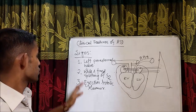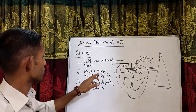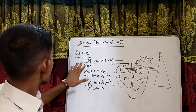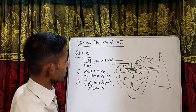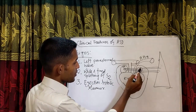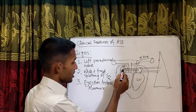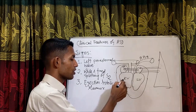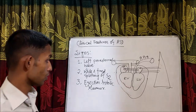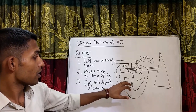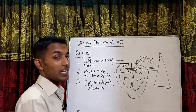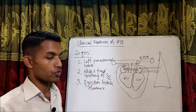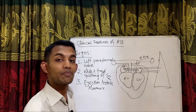Now what are the signs of ASD? The first sign is left parasternal heave, then wide and fixed splitting of S2, and ejection systolic murmur. Why is there left parasternal heave? Because blood goes from left atrium to right atrium, then to the right ventricle, causing right ventricular overload. Due to right ventricular hypertrophy from this overload, we get left parasternal heave.